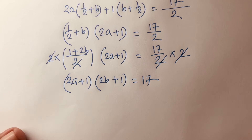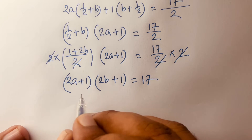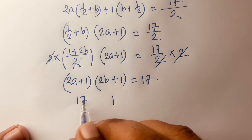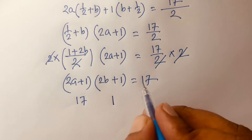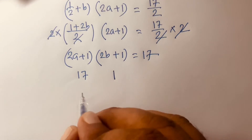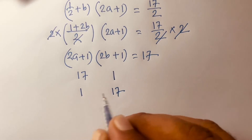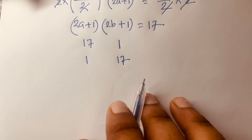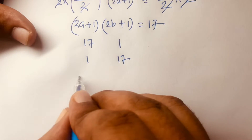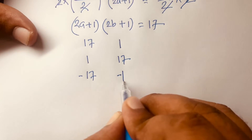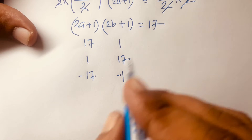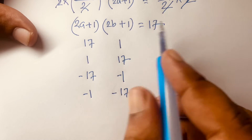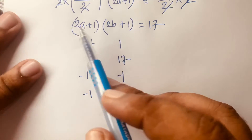Now we find the factor pairs of 17. We have: 17 times 1 equals 17, and 1 times 17 equals 17. Also, minus 17 times minus 1 equals 17, and minus 1 times minus 17 equals 17.